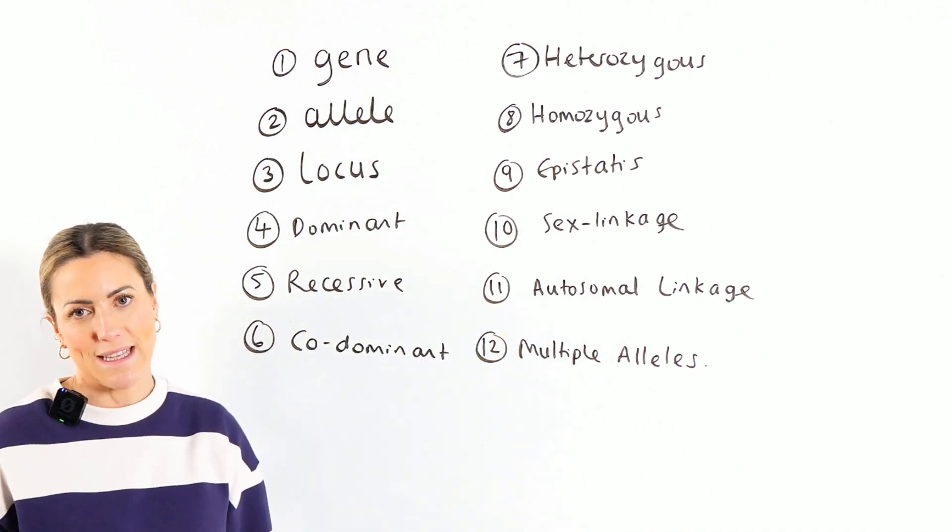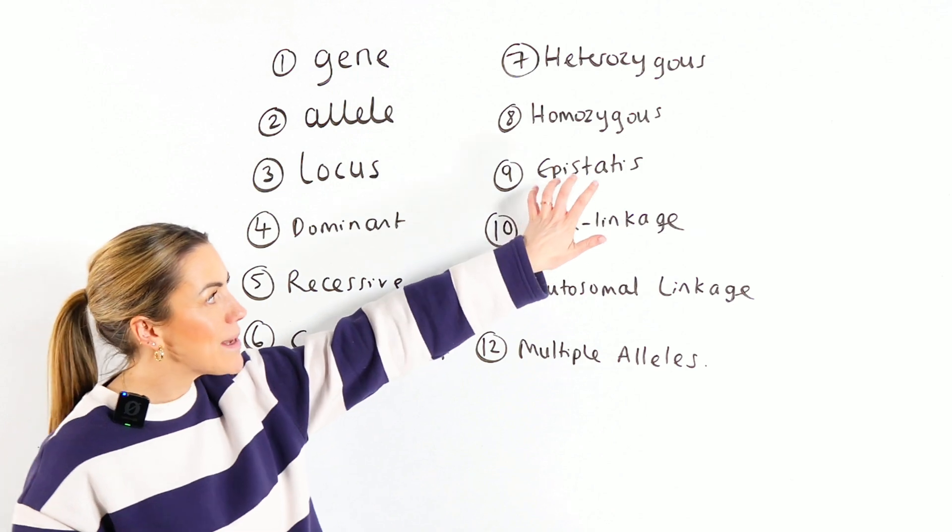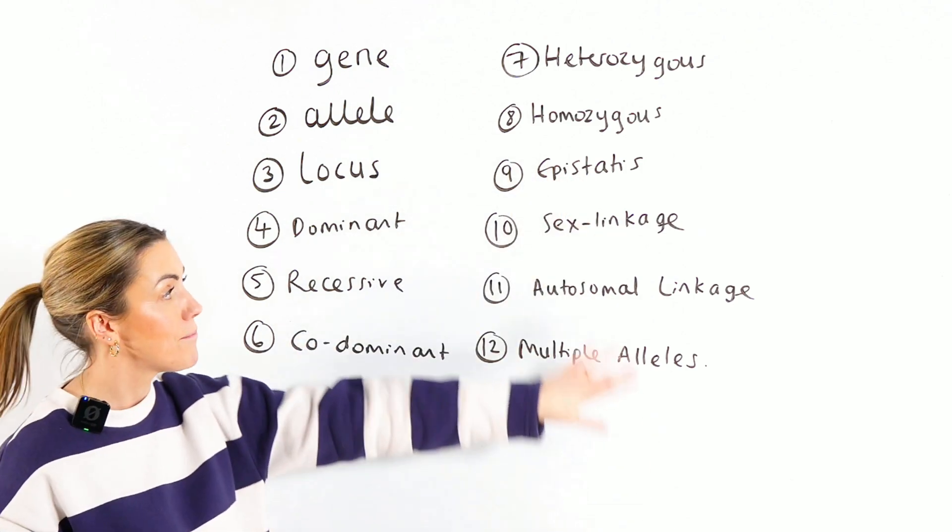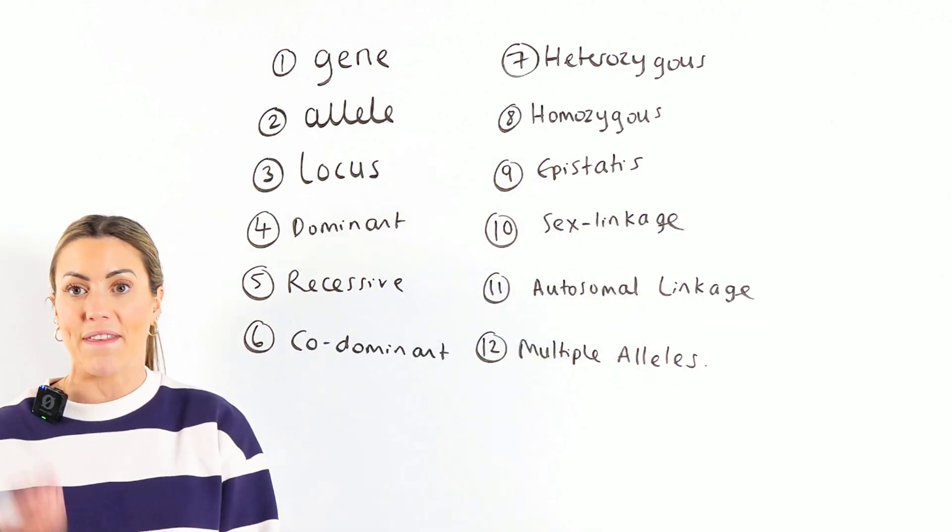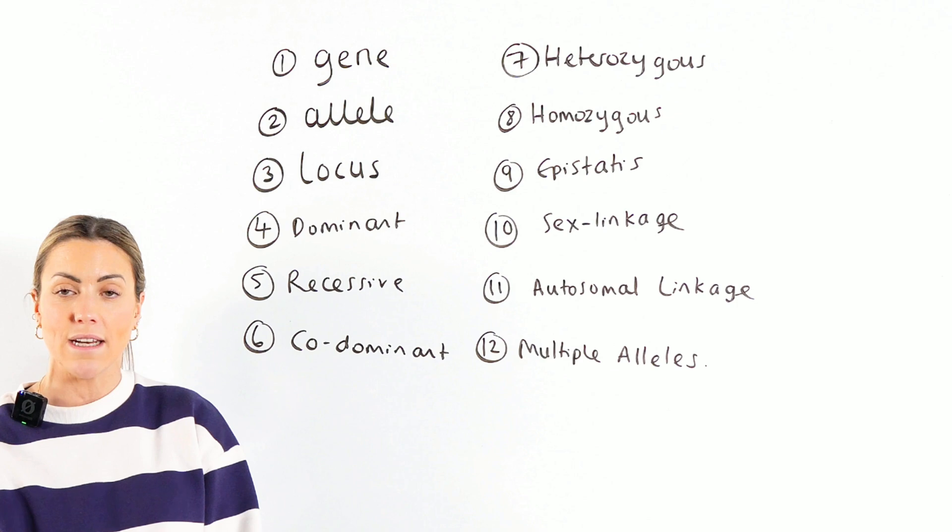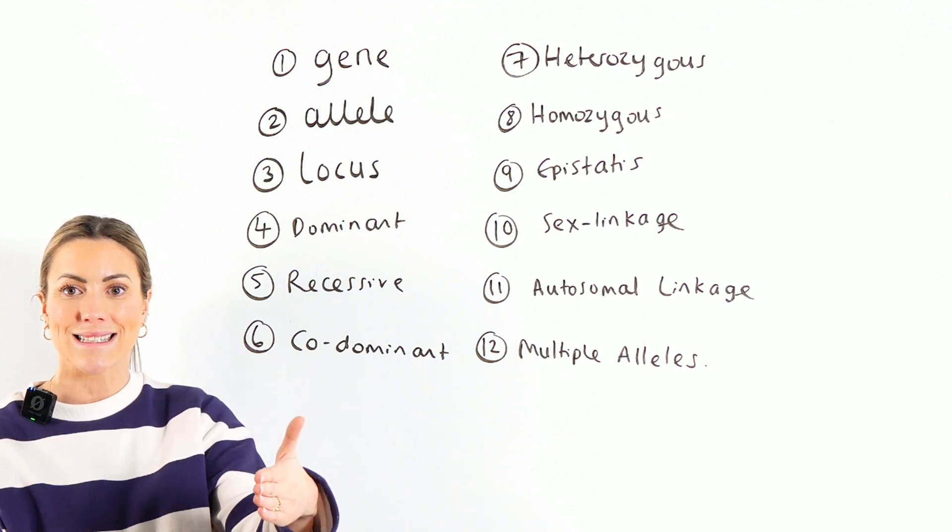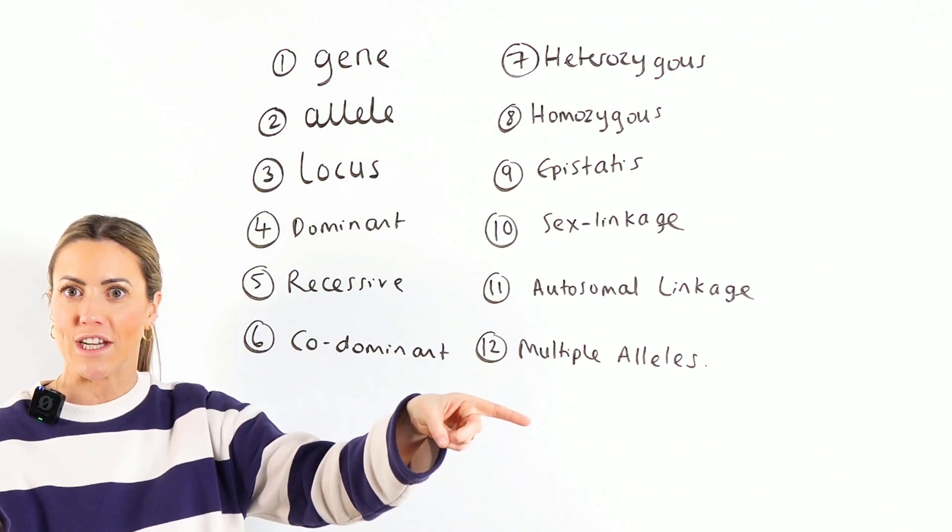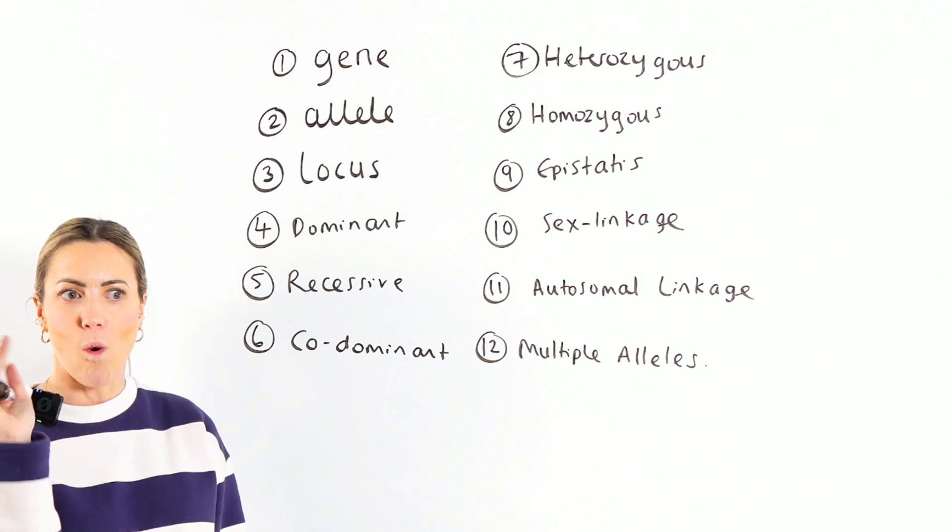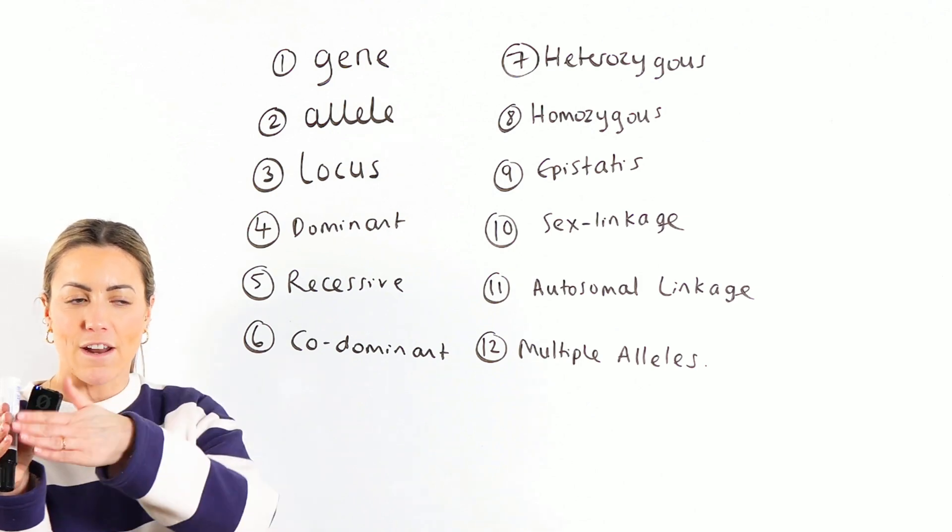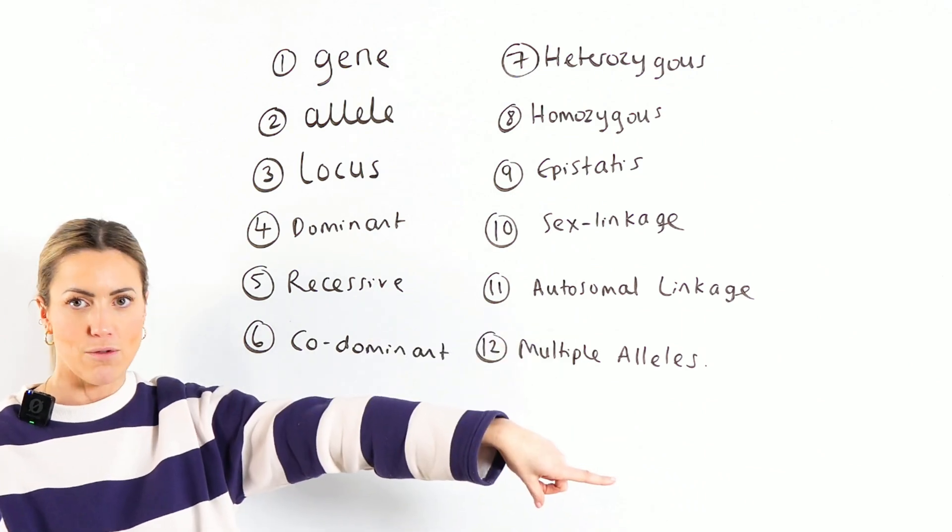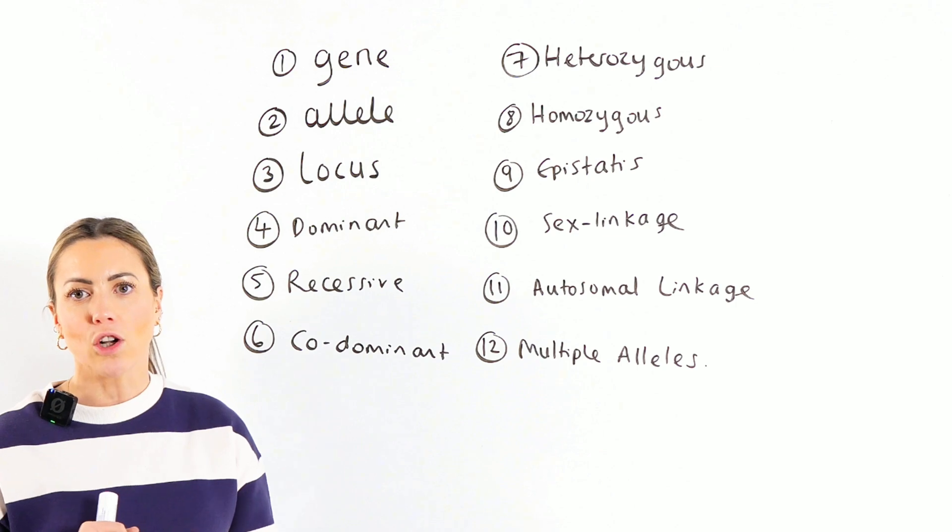Right. We're onto some A-level specific ones now, guys. Epistasis is something you will learn about and you'll see it come up in exam questions. Epistasis is where the expression of one gene can mask or modify the expression of another gene. So you've got one gene at one particular locus that can affect the expression of a different gene that's at a different locus.